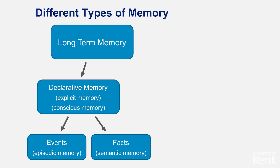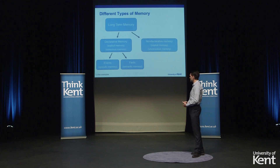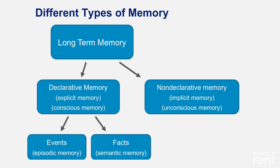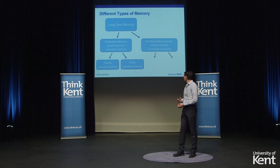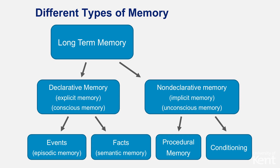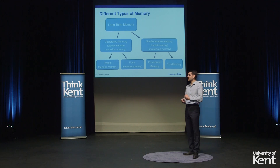There are two examples of declarative memory: events and facts. For example, what you did yesterday or what you did for your last birthday. And about facts — for example, what is the capital of a certain country. The other type of memory is non-declarative memory, sometimes called implicit memory or unconscious memory. Examples include procedural memory — how to ride a bike or how to make a cup of coffee — and also conditioning, such as Pavlovian conditioning: the bell, the dog, the food, and the saliva.